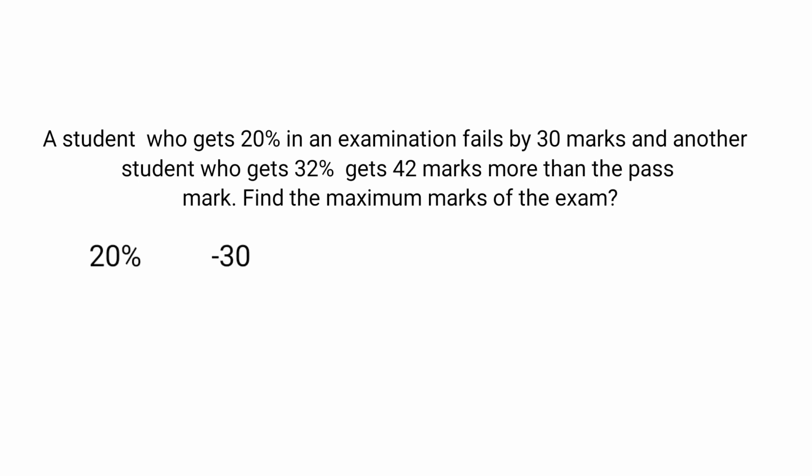Next question: a student who gets 20% fails the exam by 30 marks — that is, he gets 30 marks less than the pass mark, which is why we put a negative sign. And a student who gets 32% gets 42 marks more than the pass mark.